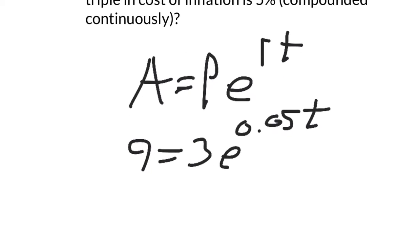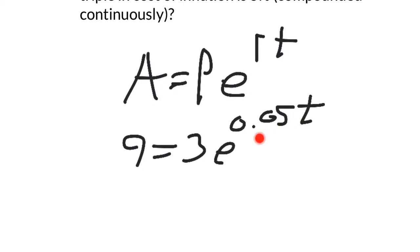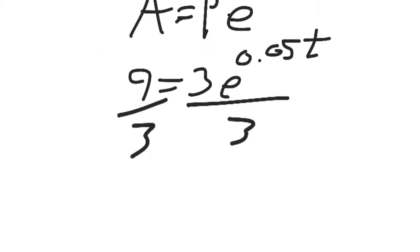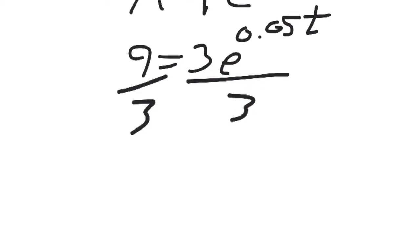So got an equation to solve. Variables in the exponent means we need a logarithm. But first, let's divide both sides by 3 because that 3 is just sitting there like a sitting duck. 3 times e can be undone by doing 3 divided by 3. So when we do that, we get 3 equals e to the 0.05t.